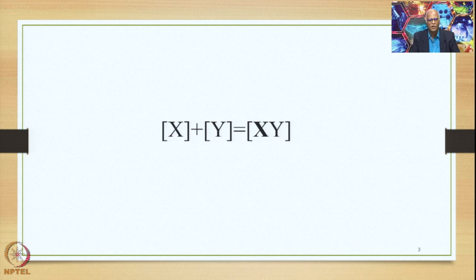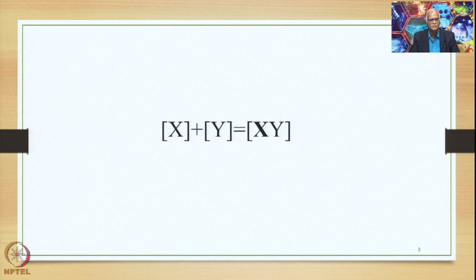Anavyaayam Avyaayam Bhavati. So in XY, only X is an Avyaaya; Y is not an Avyaaya, but the output XY becomes an Avyaaya. So an Avyaaya and something that is not an Avyaaya — Avyaayam Bhavati — becomes an Avyaaya, that is Avyaibhava.